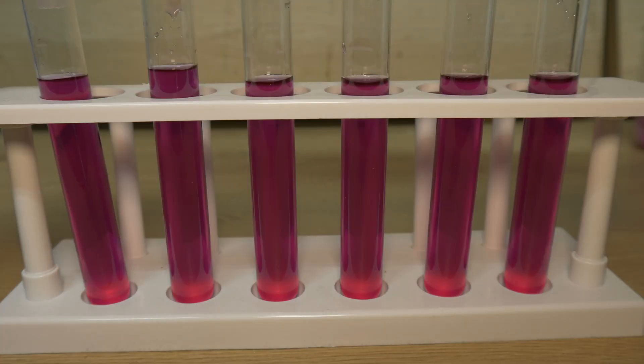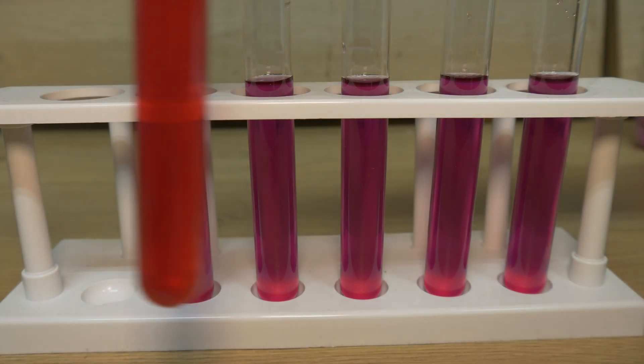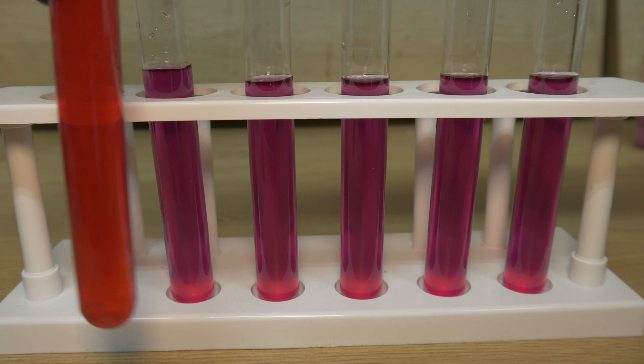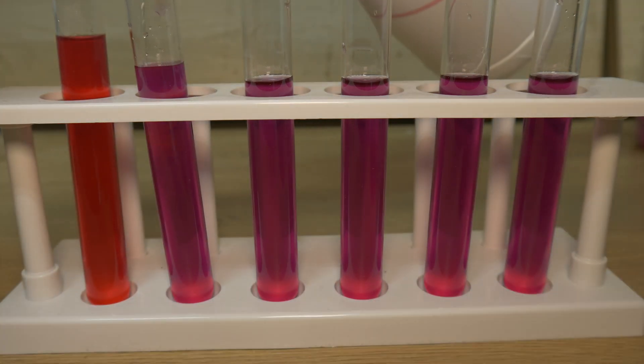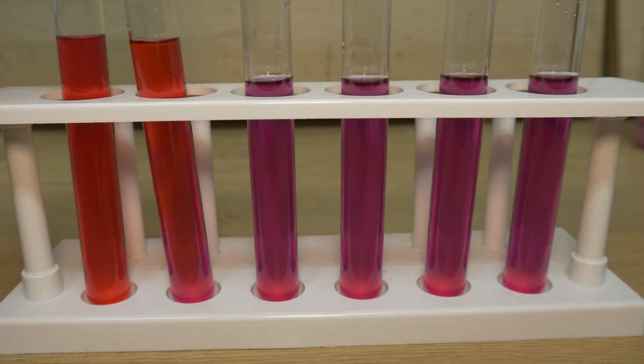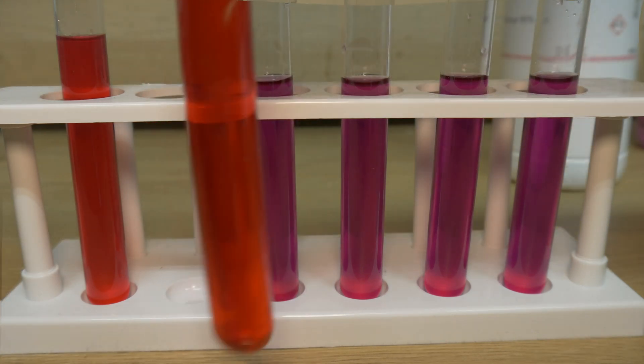We will now drop some lemon juice in the first test tube and we can see it starts to turn red, which indicates a pH from 1 to 3. We will then put the 80% vinegar in the second test tube and we can see that it is even more red than the lemon juice. This leads me to believe that the pH of the vinegar is about 2 and the pH of the lemon juice is about 3.